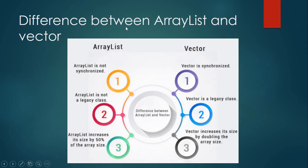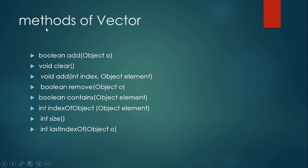These are the differences between ArrayList and Vector: ArrayList is not synchronized, Vector is synchronized. ArrayList is not a legacy class, Vector is a legacy class. ArrayList increases in size by 50% of the array size, while Vector doubles its size. The methods of Vector include: add, clear, add at specific index, remove, contains, indexOf, size, and lastIndexOf.